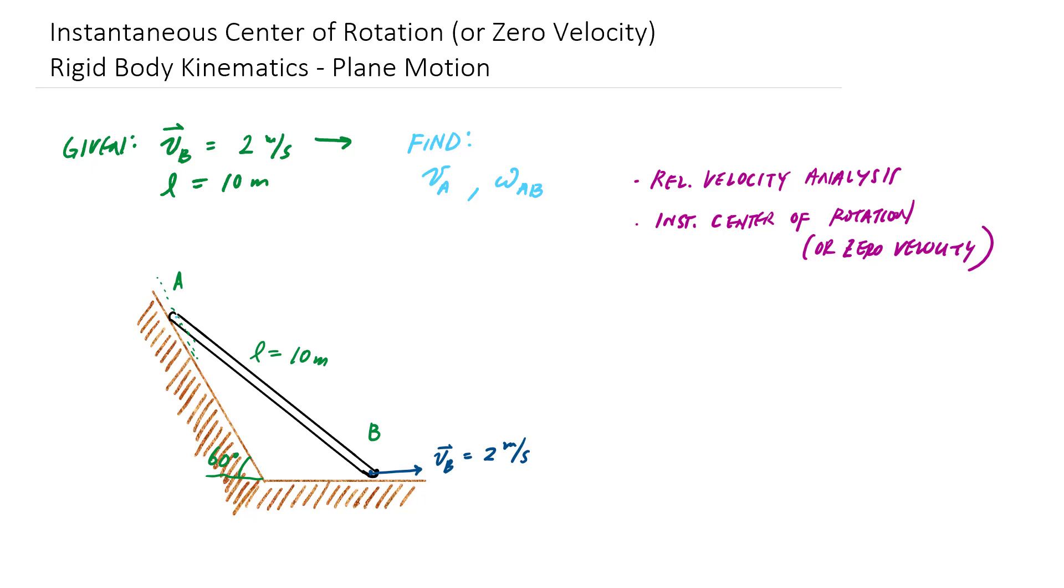And what I'd like to do is find the angular velocity of the rod, AB, as well as the velocity of point A of this rod.